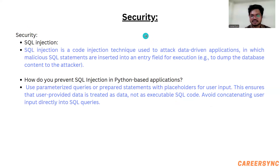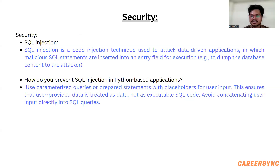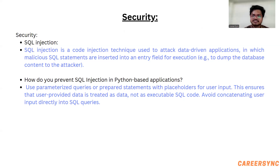These are two important security-related questions. What is SQL injection? SQL injection is a code injection technique used to attack data-driven applications in which malicious SQL statements are inserted into an entry field for execution — hackers use it to cause disturbance in the database. How do you prevent SQL injection in a Python-based application? Use parameterized queries or prepared statements with placeholders for user input. This ensures user-provided data is treated as data, not executable SQL code. Avoid concatenating user input directly into SQL queries.